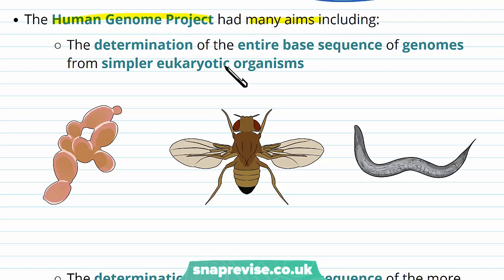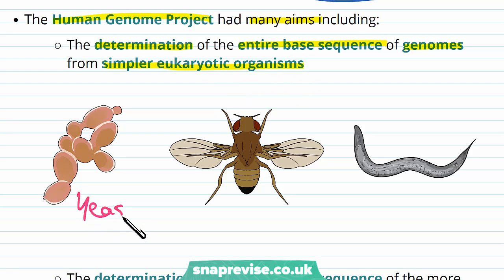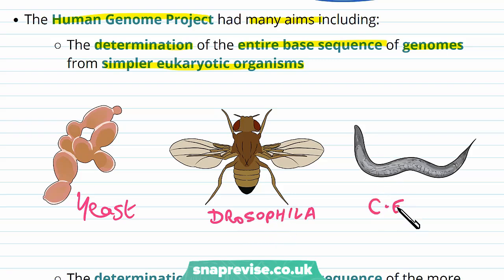The Human Genome Project had many aims. One of them was the determination of the entire base sequence of genomes from simpler eukaryotic organisms. First they worked out the sequence of simpler organisms — these could include yeast, drosophila flies, and worms like C. elegans. These are much simpler animals than ourselves and therefore their DNA was easier to sequence.